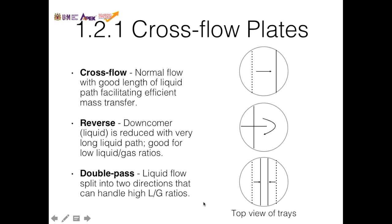Let's look at the different types of plate configurations available in an absorption tray column. One common type is the cross flow, where liquid flows from the top and drops down to the tray — this liquid is called the downcomer. It drops onto the tray, which is inclined, and falls to the next level below.